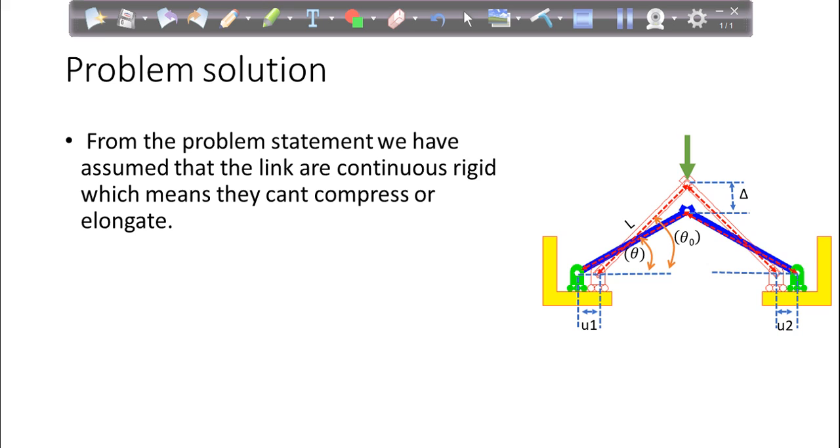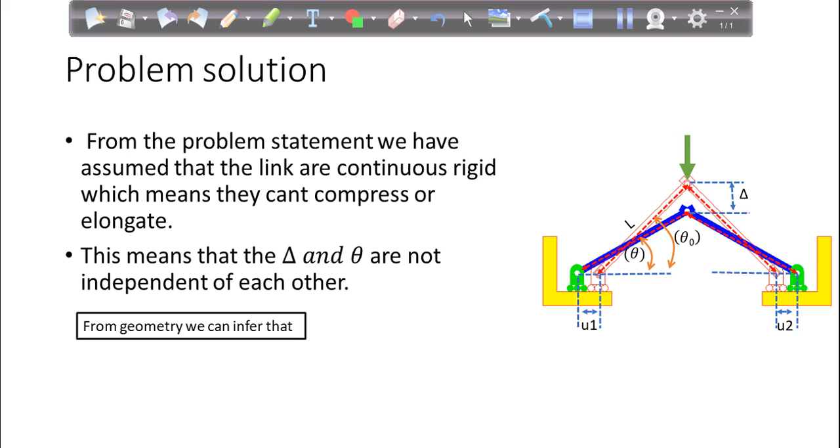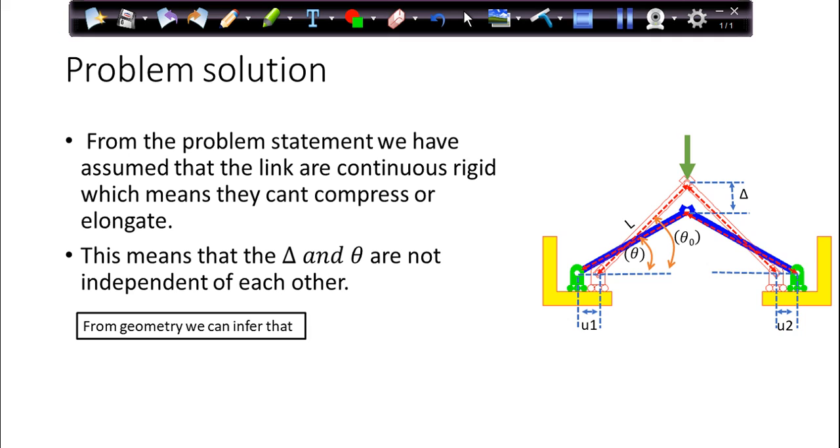And this also means that the angle, see, initially it was making theta naught and after the deflection it is making angle theta. It means that they are independent of each other because length, anyways, is going to be the same. So if I want to know like what is the deflection, horizontal deflection U, how can you find the deflection? From the geometry itself. This is the same, this is the initial position. And this one is the final, after deflection. So U1 is this. So if you subtract this length from this, you will get your U.